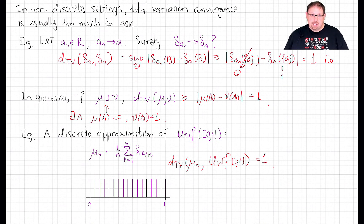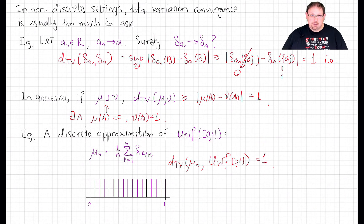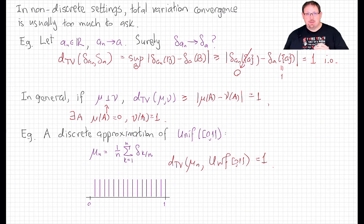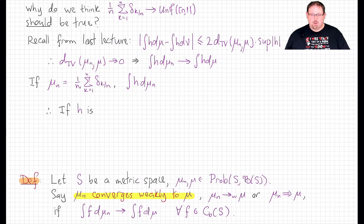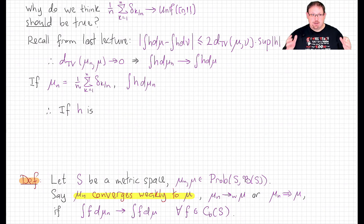Does that mean our intuition that this should be a good approximation is wrong? No. It means that our notion of convergence is wrong for most applications. To get an idea what kind of weaker convergence we really want to use, let's examine this example more closely. Why do we think that discrete approximation should approximate that measure?